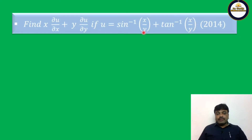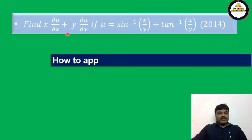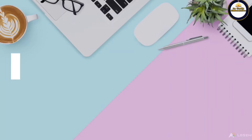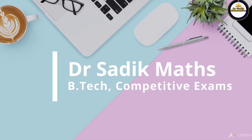Here the given functions are of different types: sin inverse of x by y plus tan inverse of x by y. To find x·∂u/∂x + y·∂u/∂y, it is very difficult to find these values directly. For this type of problem, we need one theorem — Euler's theorem.